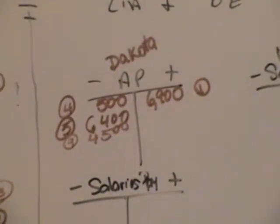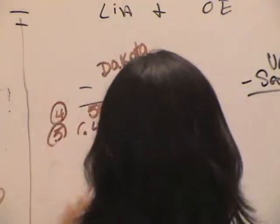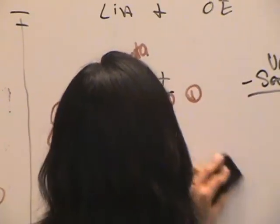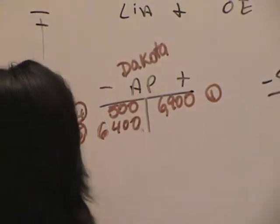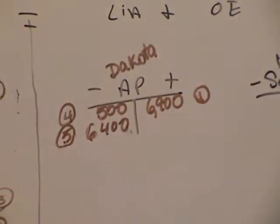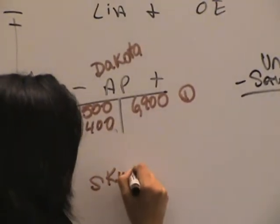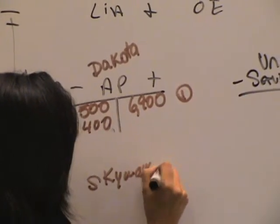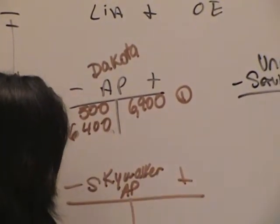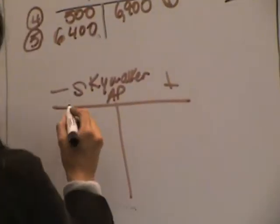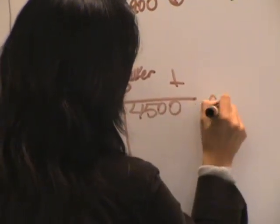So now erase to $4,500. Make a new T account for accounts payable because that was for Dakota. Make another — don't erase that one, leave it up there. Make another T account for accounts payable; this was for Skywalker. Abbreviate 'Sky' or something like that. $4,500 on the right side. That was entry 9.